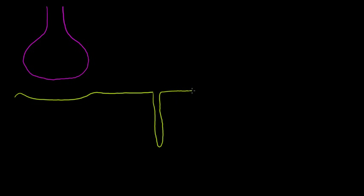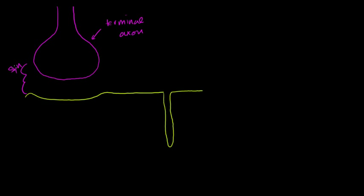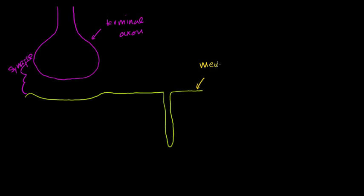This is a synapse with an actual muscle cell. Let me label everything. This is the axon — the terminal end of an axon. This is the synapse. Just a little terminology from the neuron videos: this space is the synaptic cleft. This is the presynaptic neuron, and the postsynaptic cell — which is not a neuron in this case. And this here is our membrane — the plasma membrane.